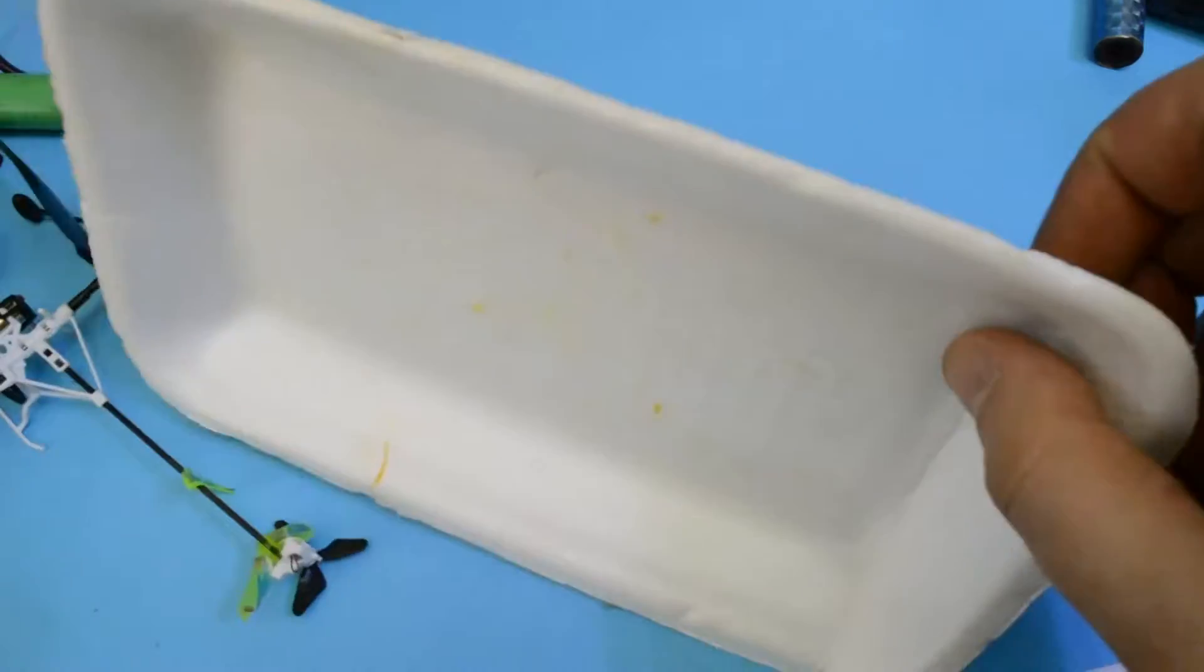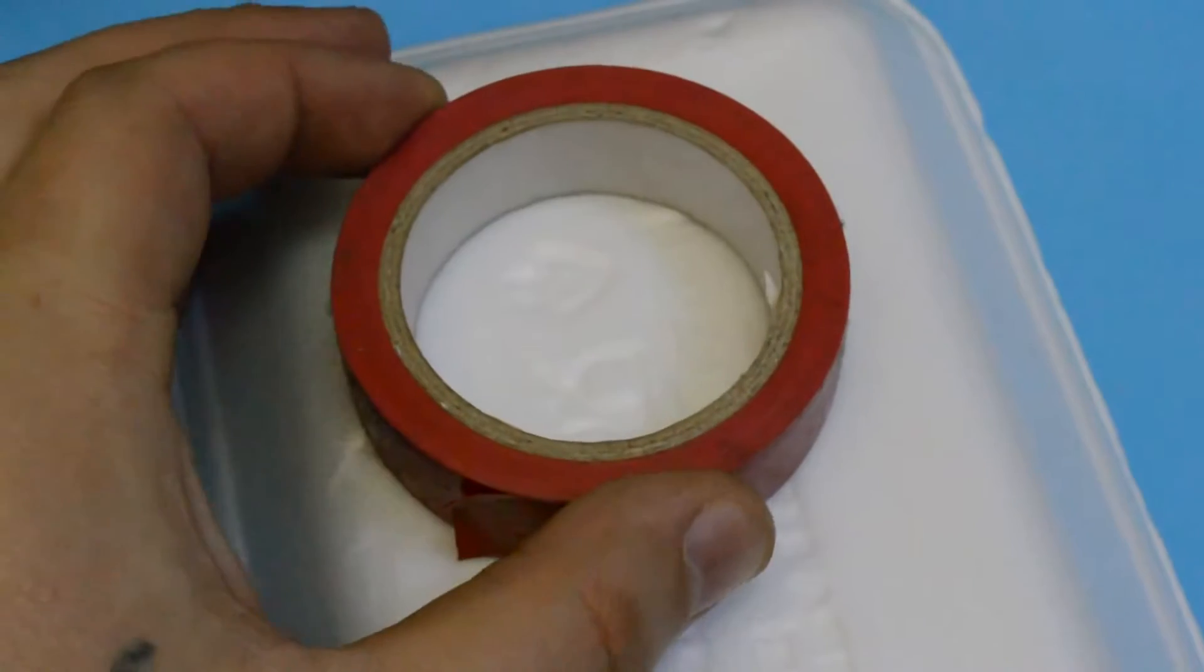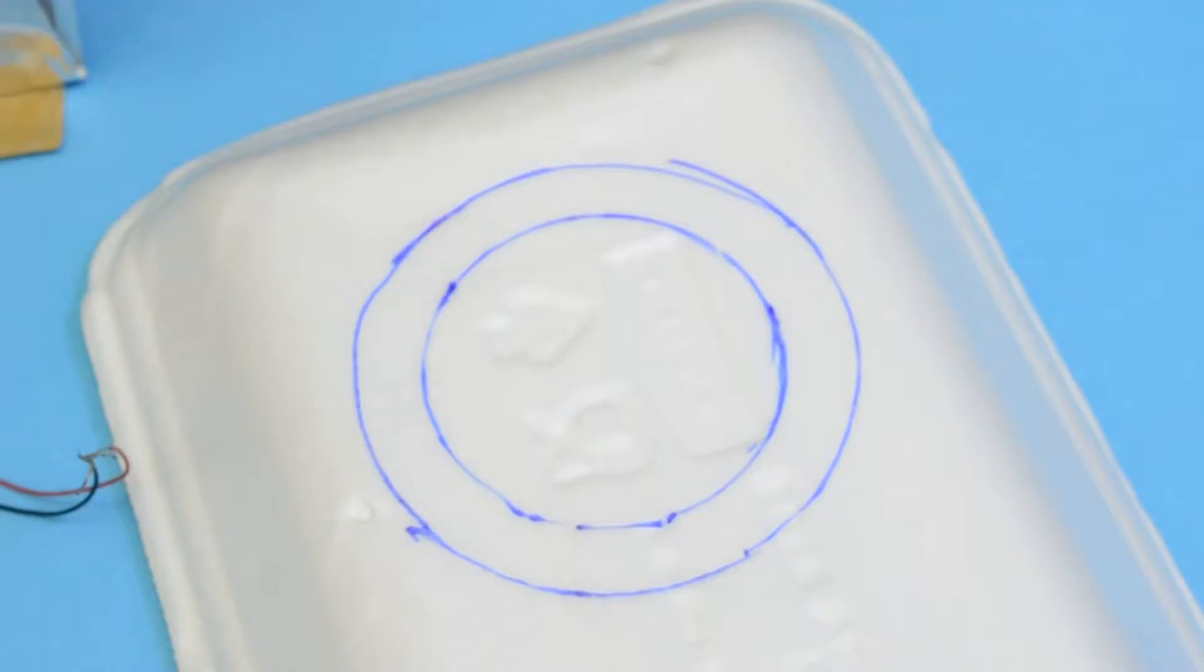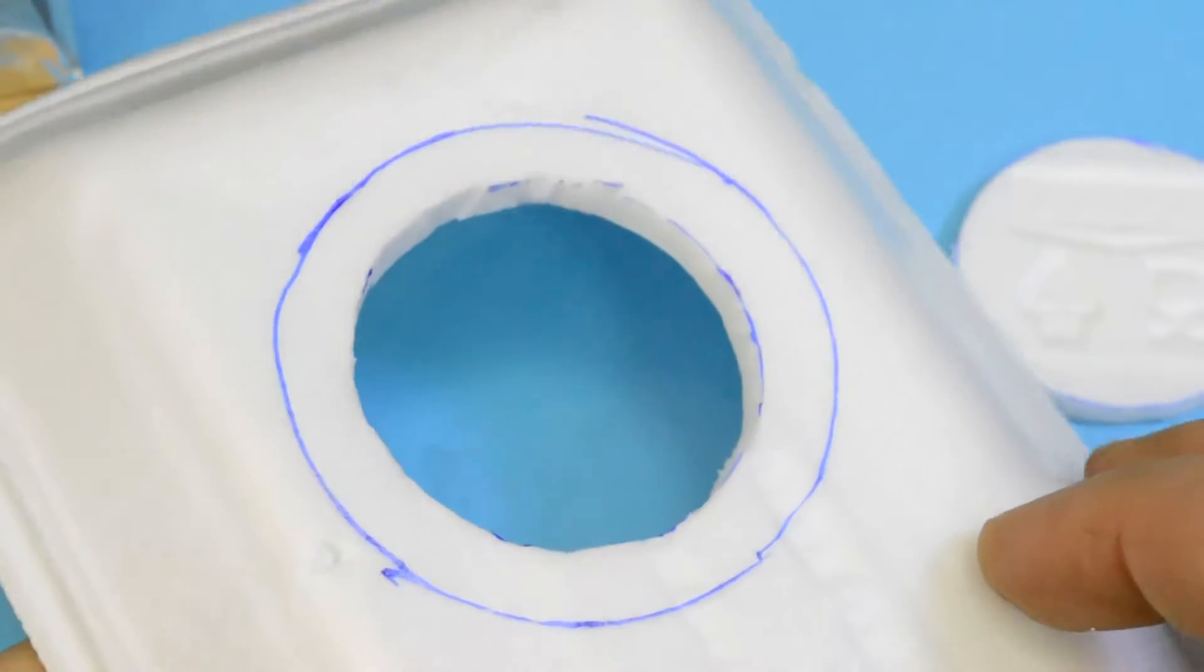Everything disassemble carefully and on this styrofoam tray we're gonna make a hole big enough for one of the motors. This fan will blow air downward and make the hovercraft move.